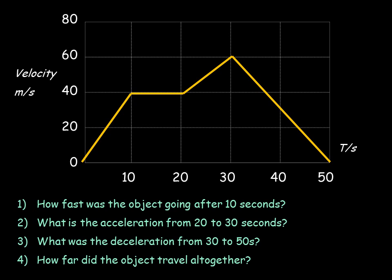Here's an exam question you could get on graphs. Well, how fast was the object going after 10 seconds? Go up from 10, you can see it would be going 40 meters per second. What is the acceleration from 20 to 30? Well, the change in speed during that time is 20 meters per second in a time of 10 seconds. So it would be 2 meters per second squared.